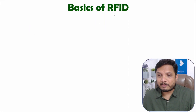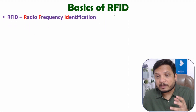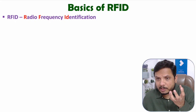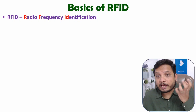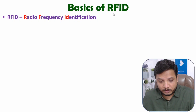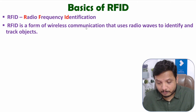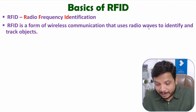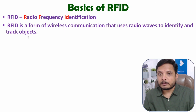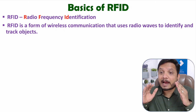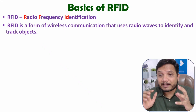RFID means what? RFID is Radio Frequency Identification. With the use of wireless communication, we will be identifying objects. So RFID is a form of wireless communication that uses radio waves to identify and track the objects. With the use of RFID, wirelessly we can identify the objects as well as we can track the objects.